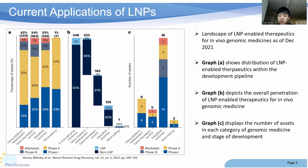And finally, Graph C displays the number of assets in each category of genomic medicine as well as their stage of development. Overall, these graphs show the potential for LNP-based therapeutics in the future. Combined with the data from the last slide, we can see how much research and resources are being poured into the development of LNP-enabled genomic medicines, despite not making significant sales currently. This further shows the promising outlook on the applications of the technology for the future.